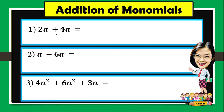This lesson is about addition of monomials. For number one, 2a plus 4a. In here, just simply add the numerical coefficient. So 2 plus 4 is 6. Then copy the given variable which is a.